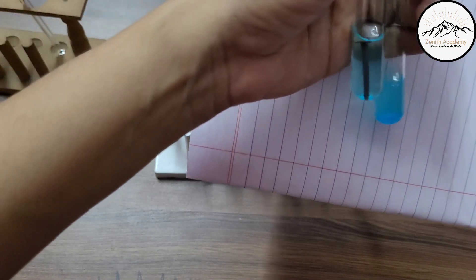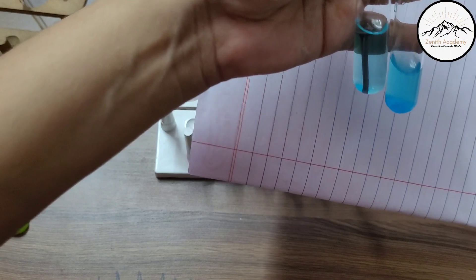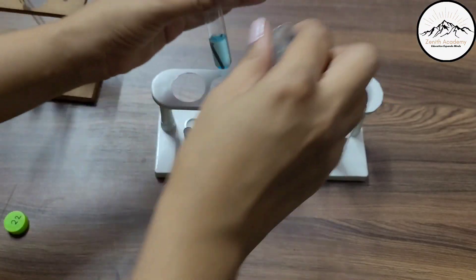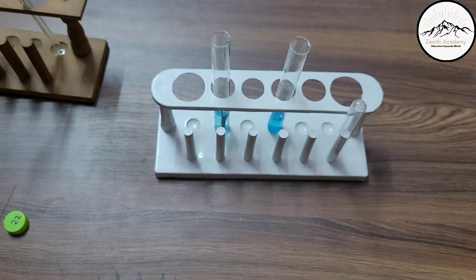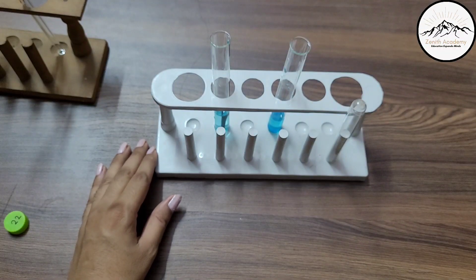Now you can see one test tube I have kept in which there is an iron nail. In another test tube there is no iron nail. Now I will keep it for over an hour.